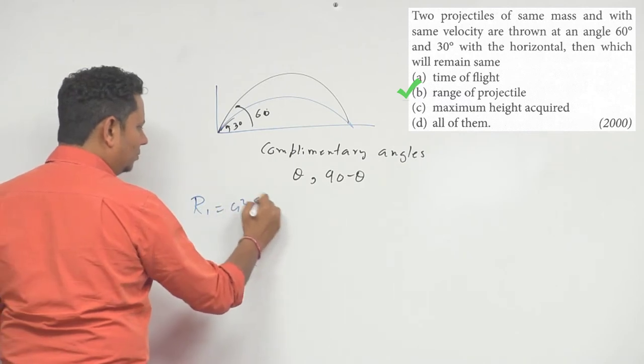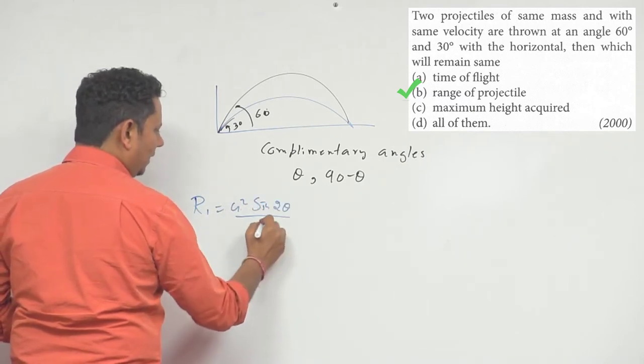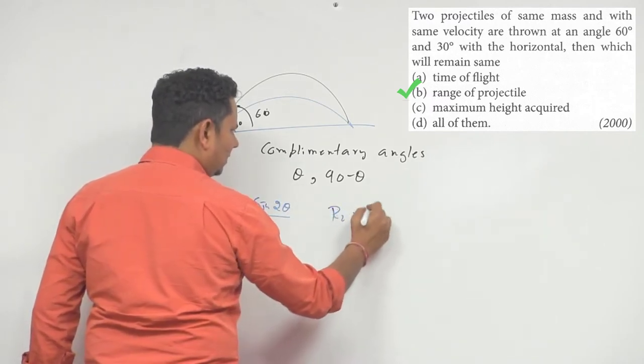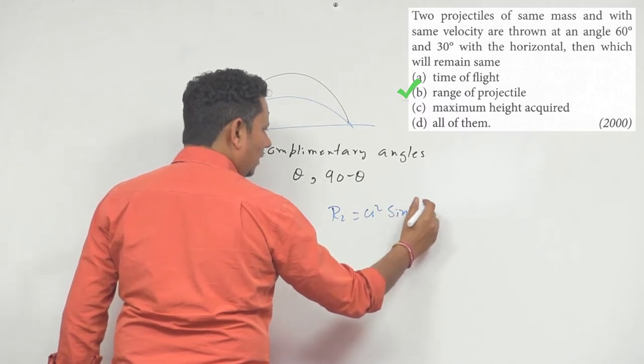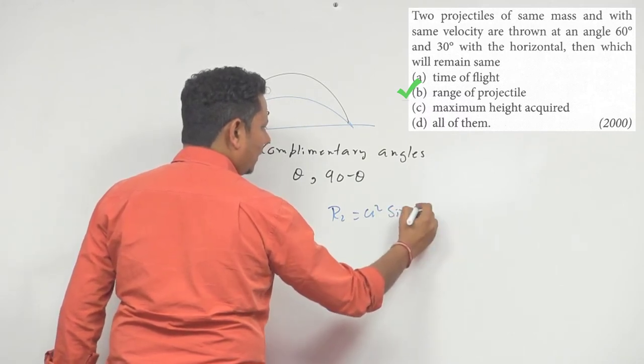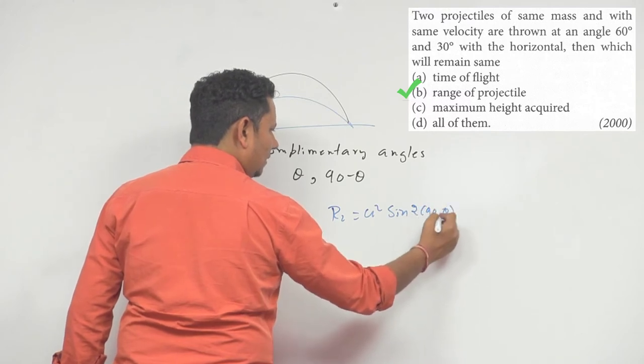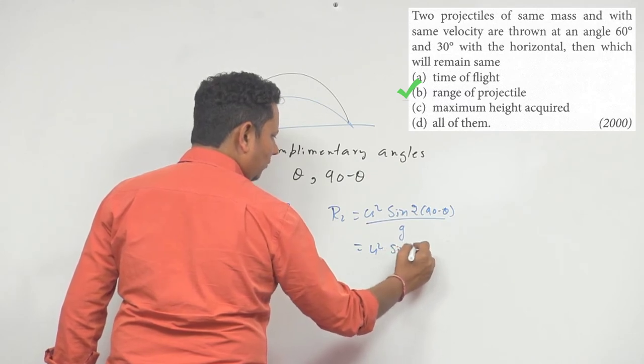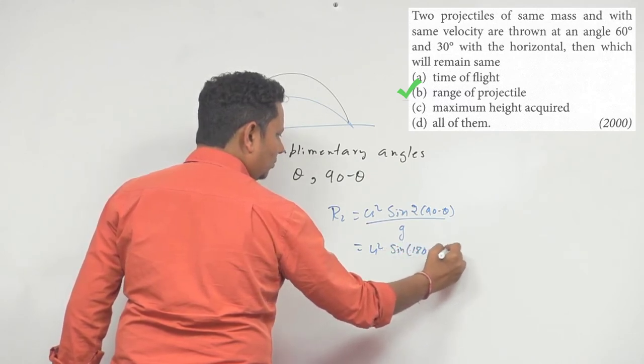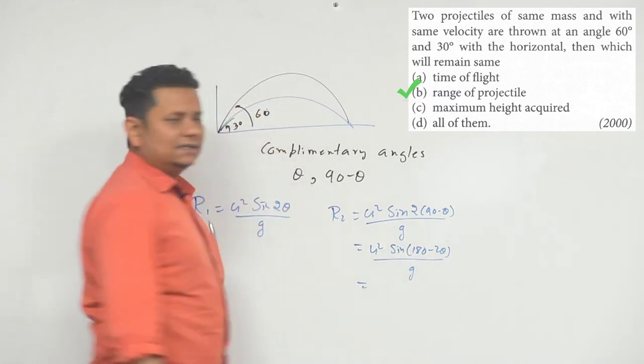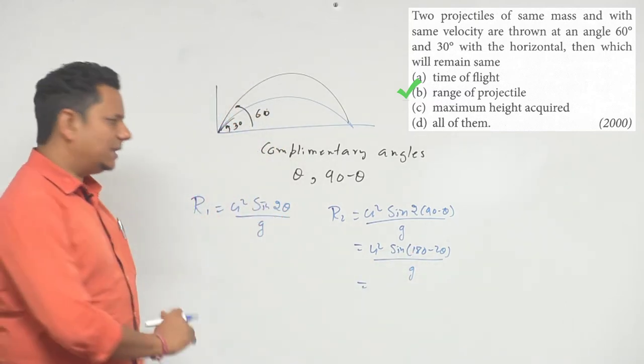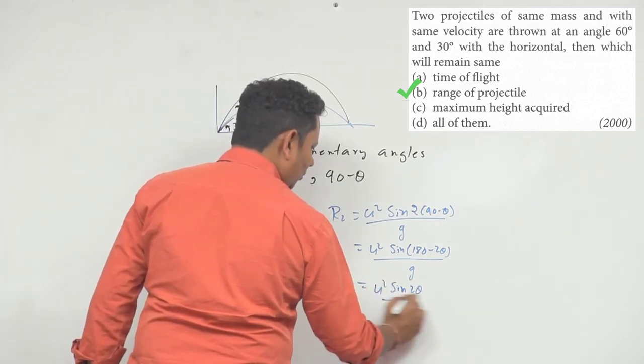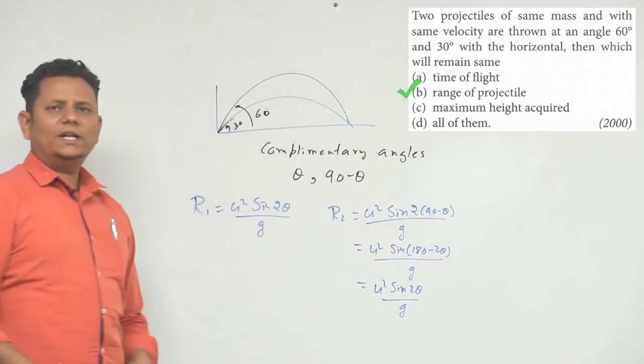R1 will be equal to u square sine of 2 theta divided by g. This range will be u square sine of twice 90 minus theta divided by g. So this will be u square sine of 180 minus 2 theta divided by g. And we know that sine of 180 minus theta is the same value. So this will be u square sine of 2 theta by g. So based on this, we can say that both ranges are the same.